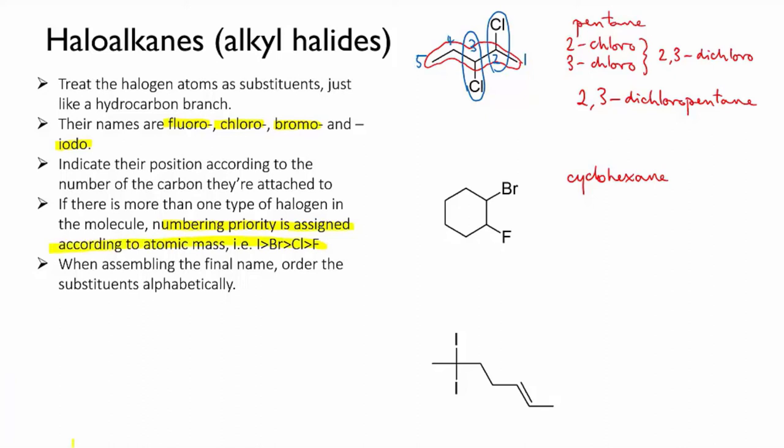So here bromine is a heavier atom than fluorine, so we're going to go with our first numbering option which will give us 1-bromo and 2-fluoro.